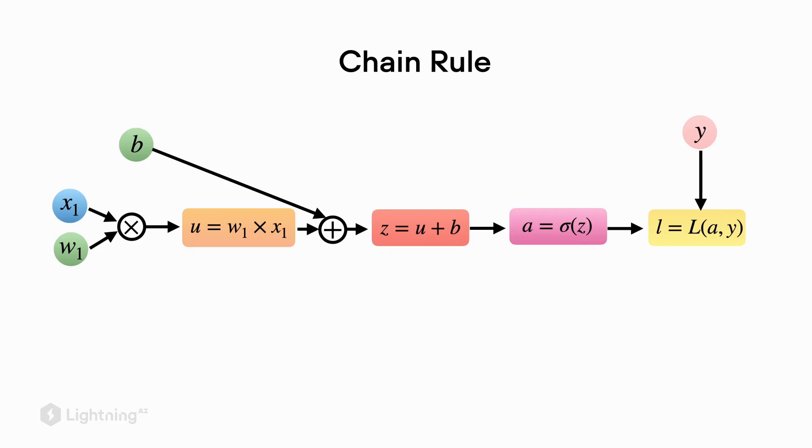The chain rule is actually a tool that we can use to compute partial derivatives for a nested function. So if we want to compute the partial derivative of the loss with respect to w1, we can use the chain rule to break it down into individual steps that we can then combine. And this is where our computation graph will come in handy.